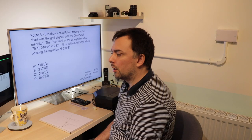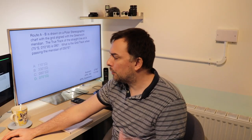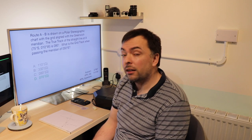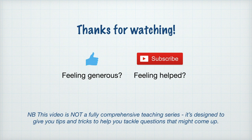The grid track is 070 degrees. Looking at the answer options — 110 grid, 330 grid, 090 grid, or 070 grid — it's 070 degrees grid. You can check this on AvExam as question 47897 and on ATPL-GS as 110169. Couldn't find it on ATPL questions — it's probably on Bristol, so if you've got Bristol, post the number in the comments. Now's about the time you probably want to take a break, so when you're ready for more polar stereographics I'll see you in part three. In the meantime, I'd love it if you would like and subscribe — see you then.